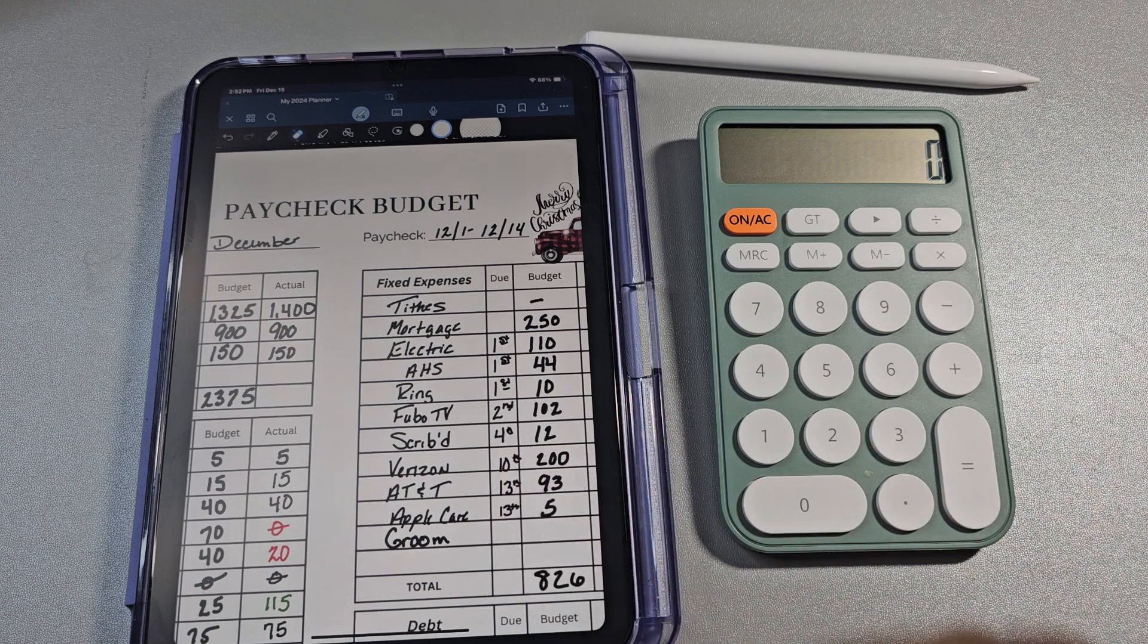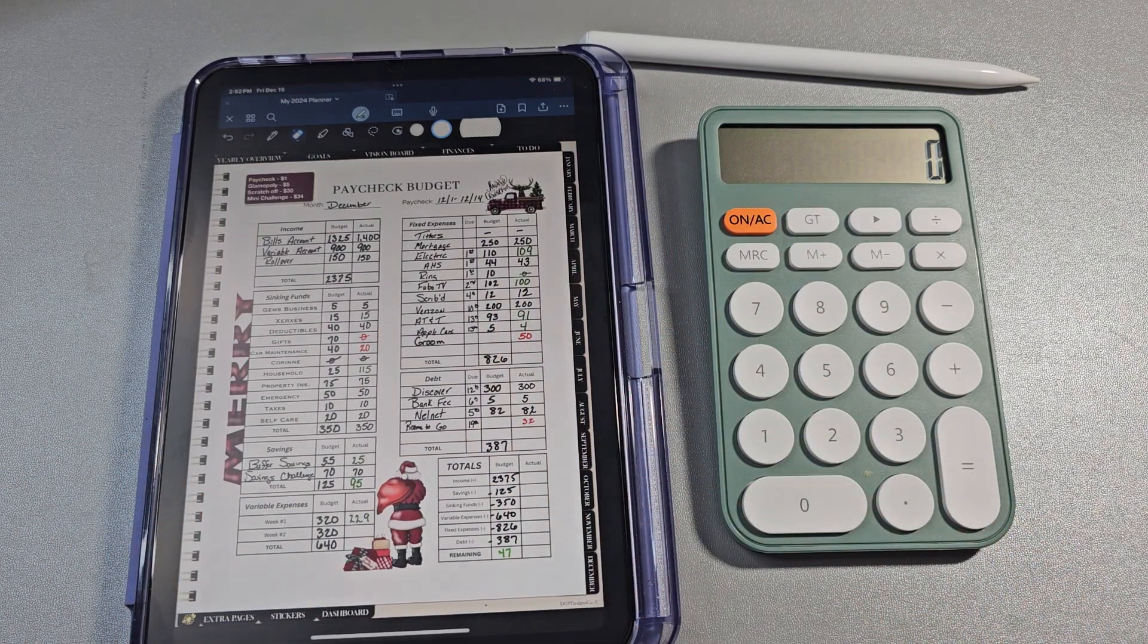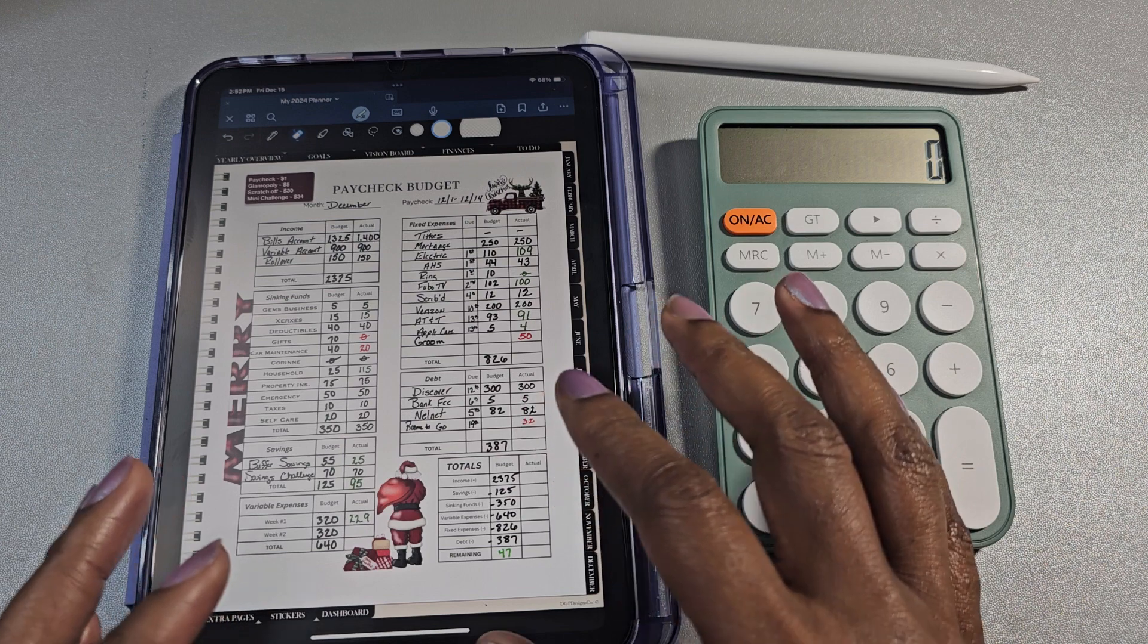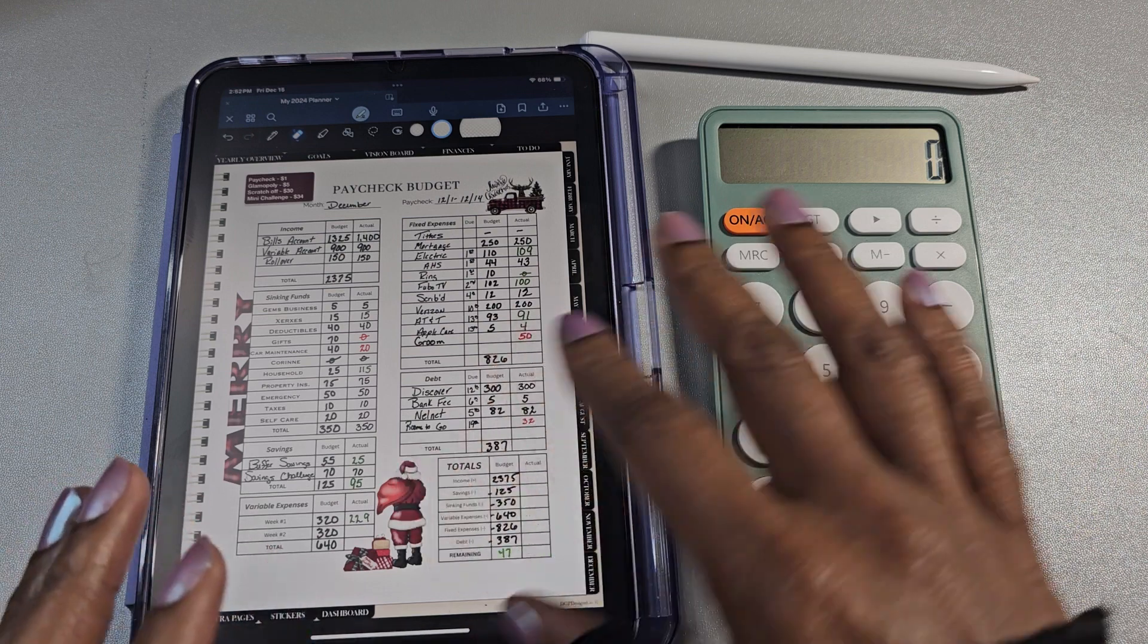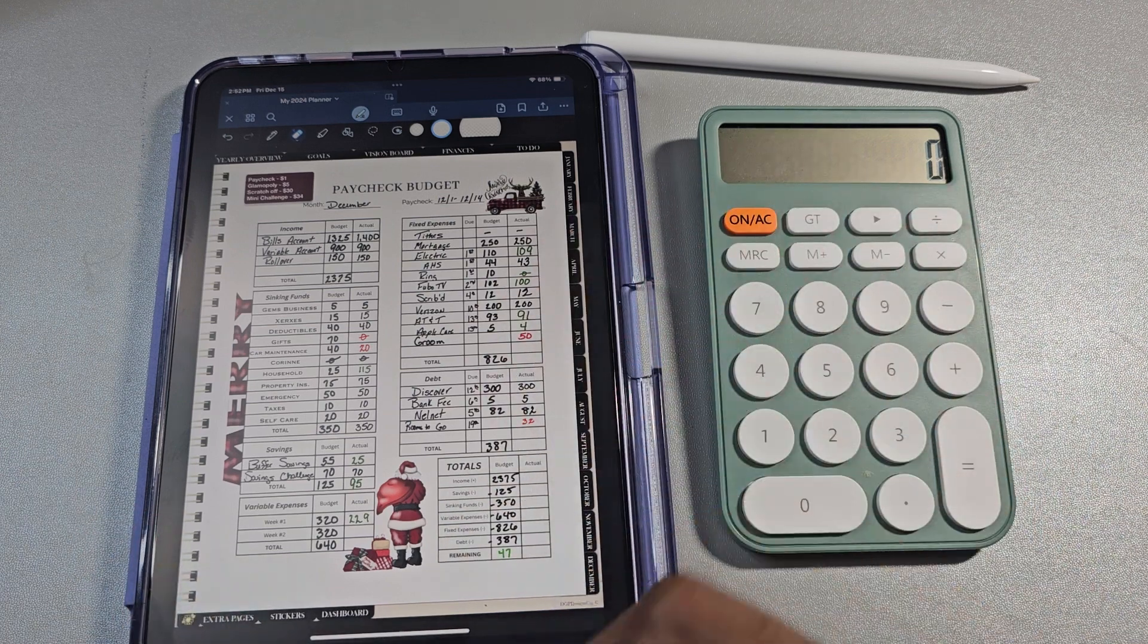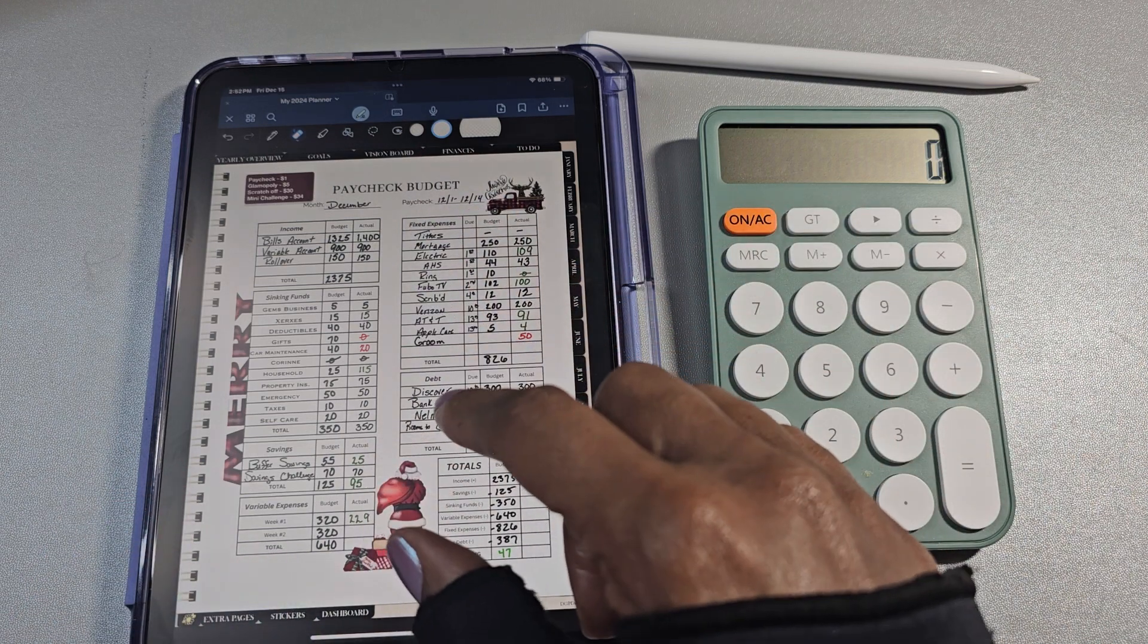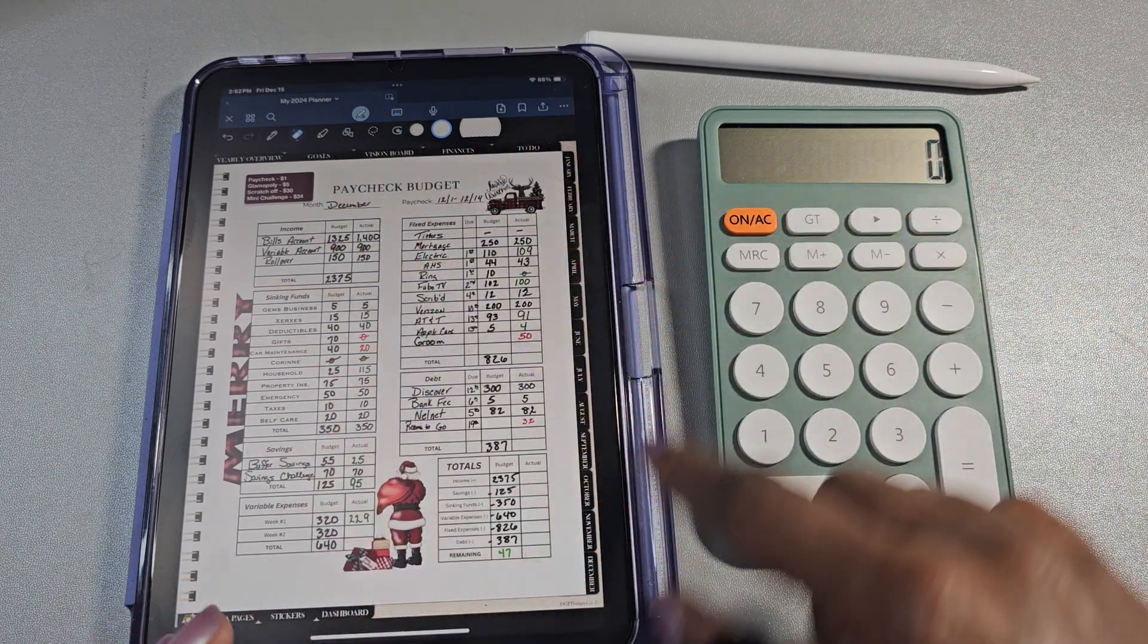If you saw my budget with me for the December 15th paycheck, you may notice that this form is very different than that form. So this form is a form that I created myself in Canva, free version of Canva, and then I copy and paste it to a blank page. It's allowed me to have all of the specific rows and categories that I've wanted that makes sense for my life and for my budget, and then gave me a little bit of space to be able to decorate as well.